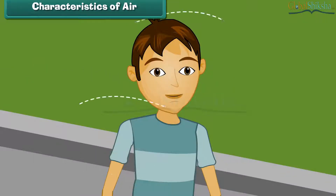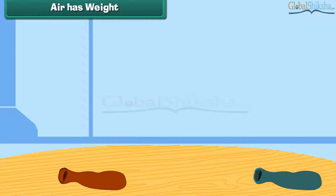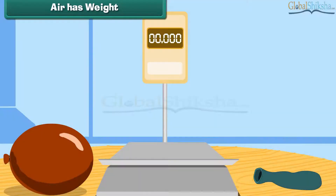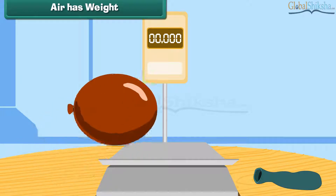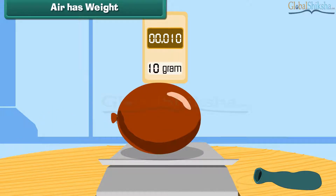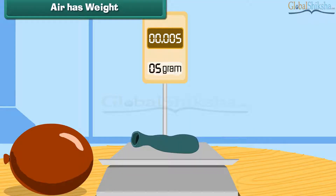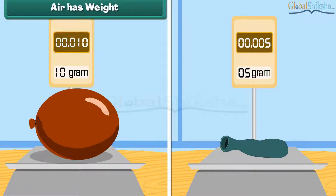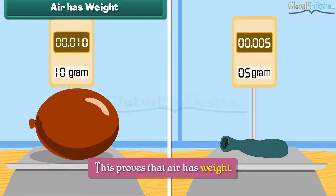We cannot see air but we can feel it. Air has weight. Take two inflatable balloons and blow air into one. Weigh it, then weigh the deflated balloon. The inflated balloon feels heavier than the deflated one. This proves that air has weight.